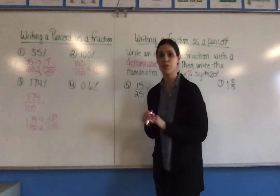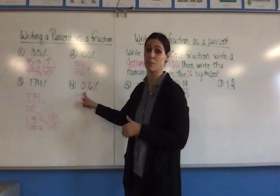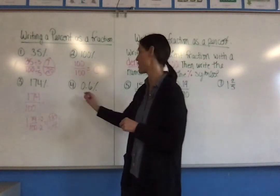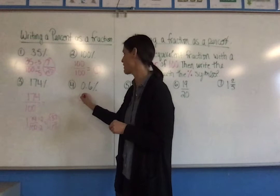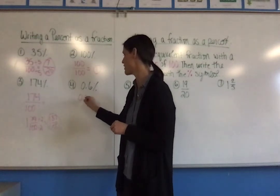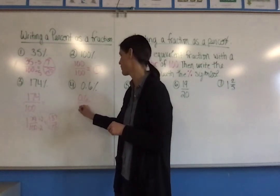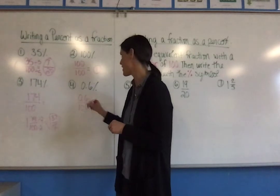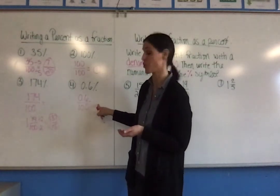Number four, you can see, is a percent, but it's a percent that is a decimal. You still follow the same steps, and you're going to start by taking the number, which is 0.6, and write it over 100. However, with this, you actually have to divide by 100 first.